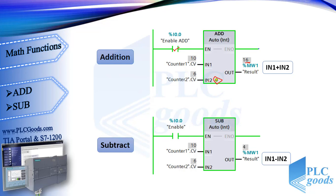The subtract instruction subtracts the value at input IN2 from the value at input IN1 and sends the difference to its output. If you click here, another input will be inserted to the add function, so you can use it to add 3, 4, or more values. But the subtract function doesn't have this feature.